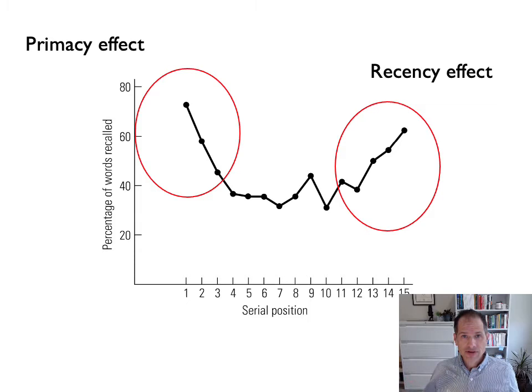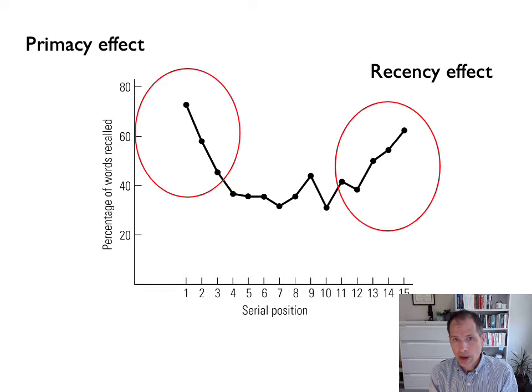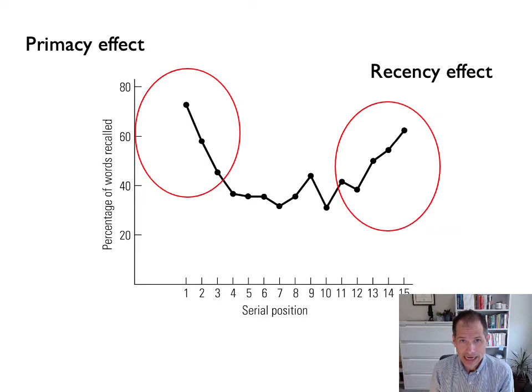If it just means that words are active in your working memory because you've heard them more recently, that would account for the recency effect but doesn't explain the primacy effect. In other words, we need two different components of a memory theory. When this finding was originally discovered, in the golden era of cognitive psychology — the information processing era — it gave rise to a model called the modal model.